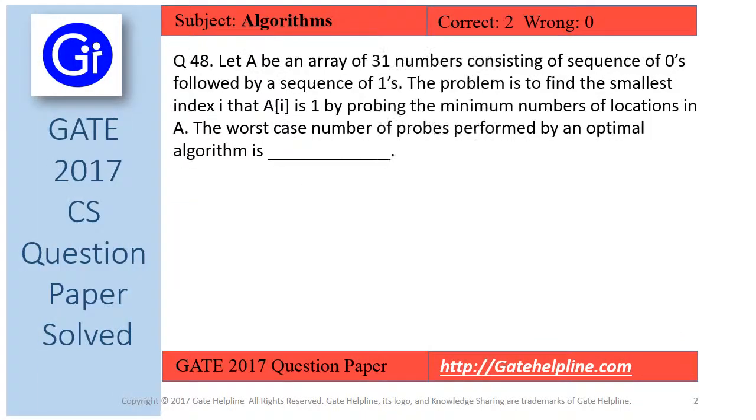So question number 48 is: Let A be an array of 31 numbers consisting of a sequence of 0's followed by a sequence of 1's. The problem is to find the smallest index i such that A[i] is 1 by probing the minimum number of locations in A. The worst case number of probes performed by an optimal algorithm is ____.